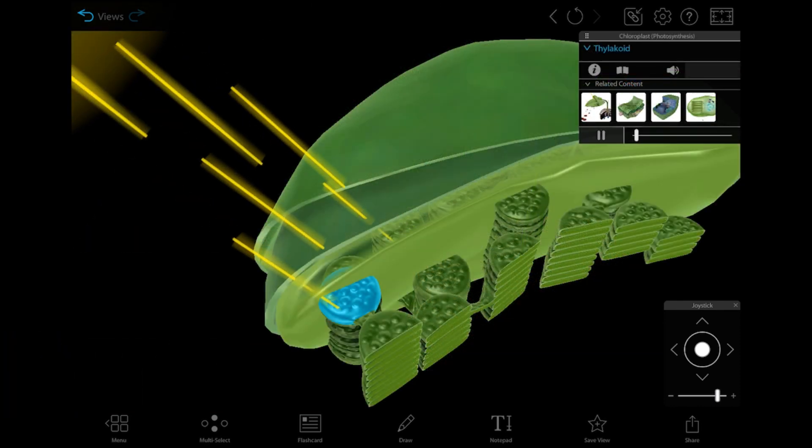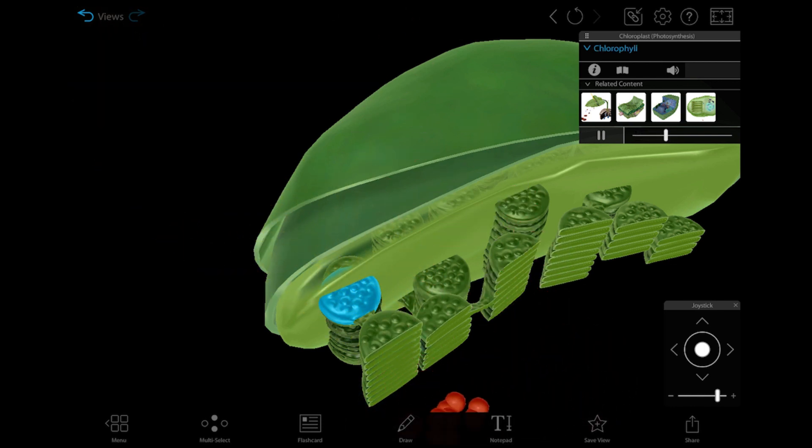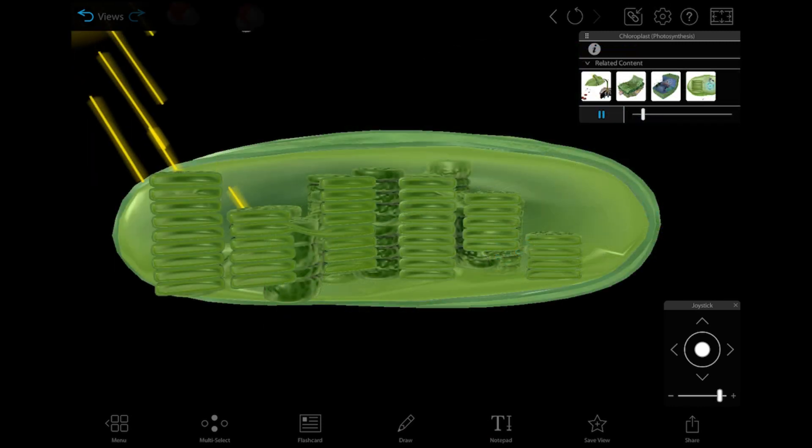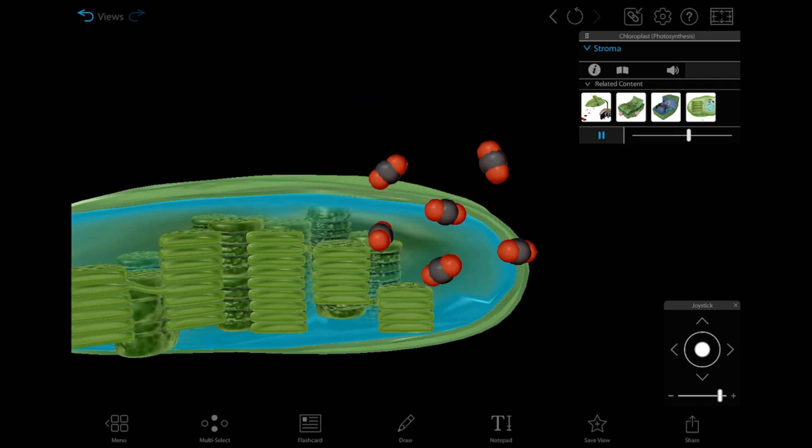During photosynthesis, the thylakoids convert light energy from the sun into chemical energy in the light-dependent reactions. The stroma is the site of the light-independent reactions of photosynthesis, which use carbon dioxide and the products of the light-dependent reactions to make sugars.